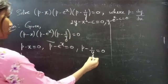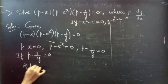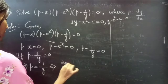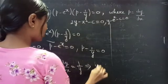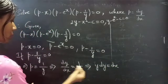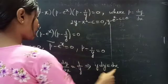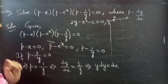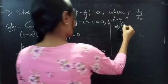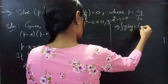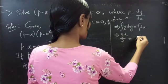When P minus 1 by y equals to 0, then P equals to 1 by y. Now put P equals to dy by dx. We can write this as y into dy equals to dx, since variables are separable. We will integrate on both sides.